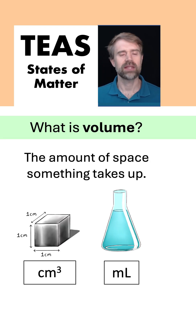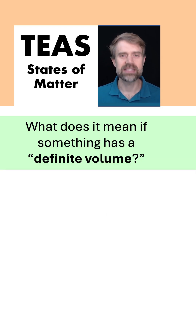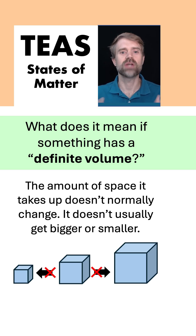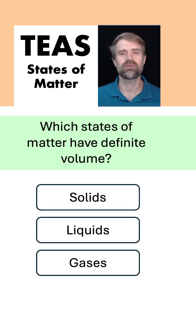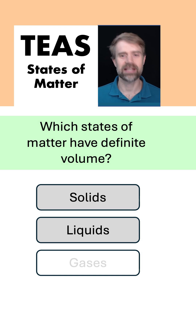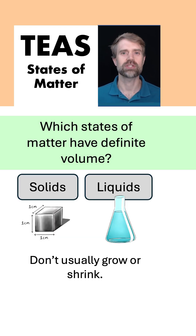What's volume? It's the amount of space something takes up. And what does it mean if something has a definite volume? It means the amount of space it takes up doesn't normally change — it doesn't just get bigger or smaller. Which states of matter have a definite volume? Solids and liquids. They don't usually grow or shrink; the amount of space they take up doesn't change.